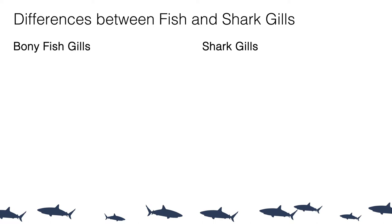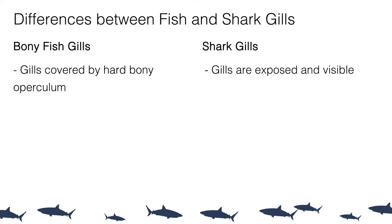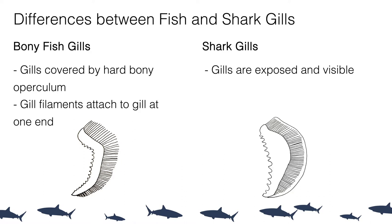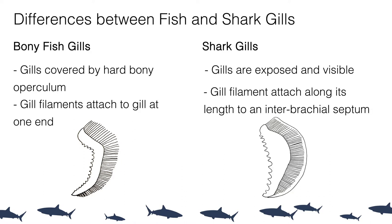Another difference is that bony fish gill filaments attach to the gill at only one end, so the other end is free-floating. Whereas elasmobranch gills have filaments attached along their length to an interbrachial septum. Interestingly, these gill arches are where elasmobranchs actually first got their name — roughly translated, elasmobranch means 'plate gills,' referring to the way the gills line up next to each other.